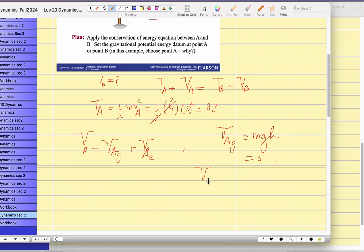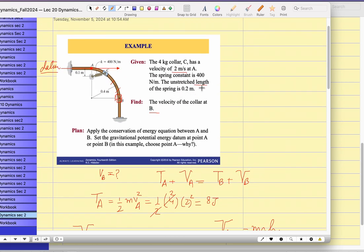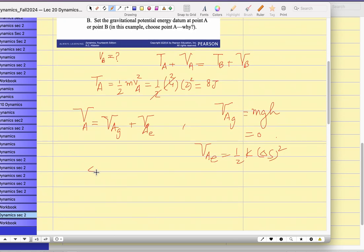But V A sub E, which is half K delta S squared. What is the delta S? Now you have to read the statement that the unstretched length is 0.2. So what is the deflection state? When it comes, imagine the spring comes over here. What is this length when the spring is compacted? 0.1. But the net deflection is delta S at position A is final minus initial is 0.2. I believe it is 0.2, correct? It is minus 0.1. So let's plug it in over here.